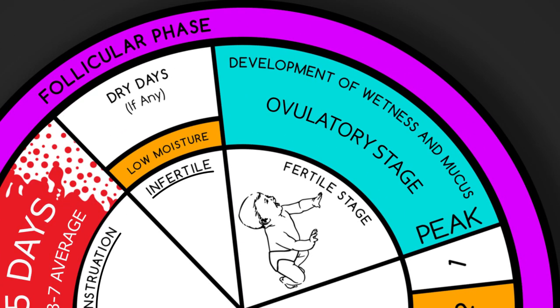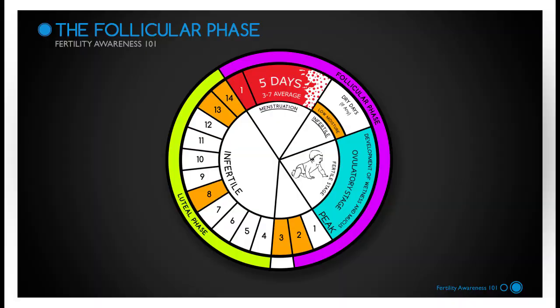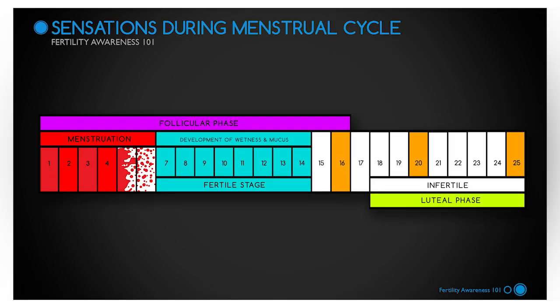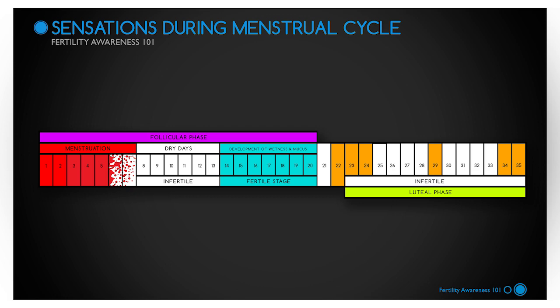The ovulatory stage is the last several days of the follicular phase. Ovulation typically occurs mid-cycle — approximately day 14 of a 28-day cycle. However, the follicular phase can be the most variable from woman to woman and even from cycle to cycle. Some women ovulate much earlier or later in the cycle.